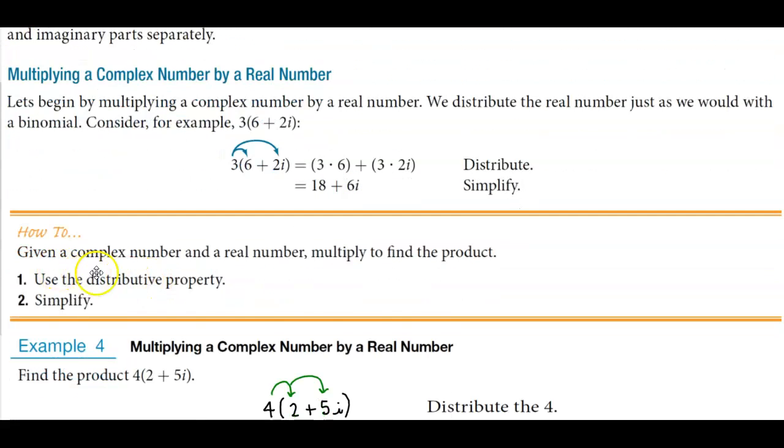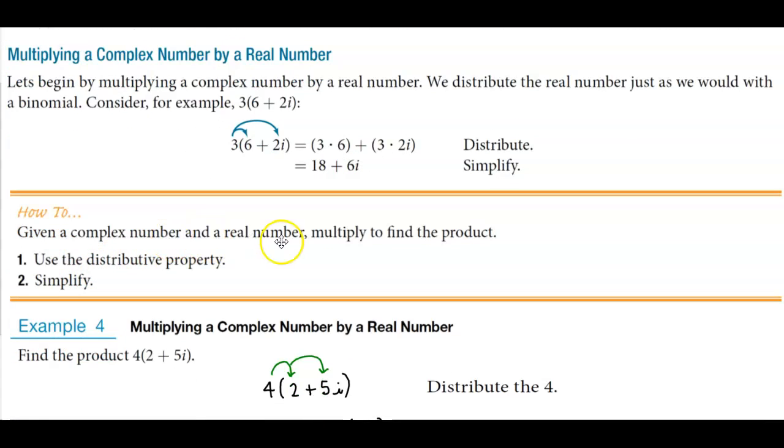So if we're given a complex number and a real number, we're going to multiply to find the product. We're going to use the distributive property and then simplify.